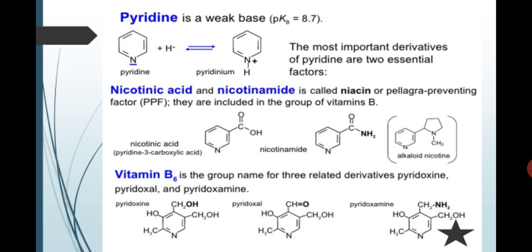Next is pyridine is a weak base. pKa is 8.7. This concept is also important in exam. The question asks: pyridine is a weak base and pKa value is 8.7, two marks.